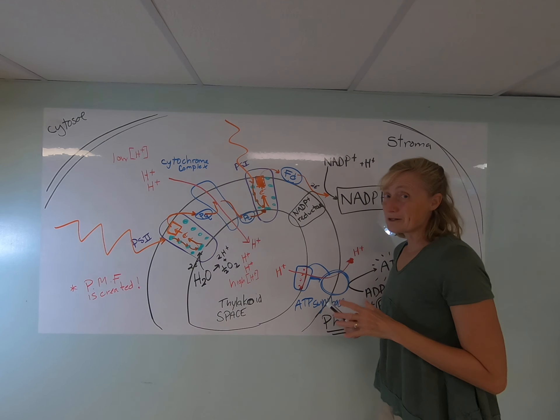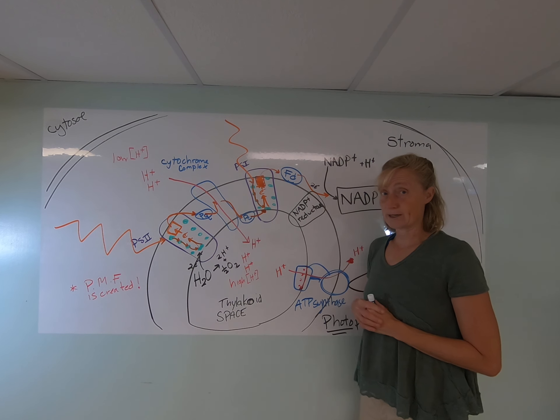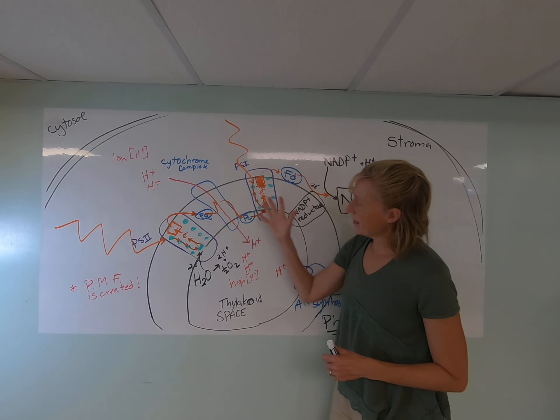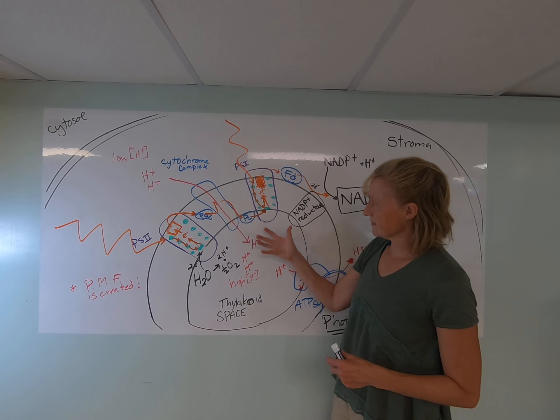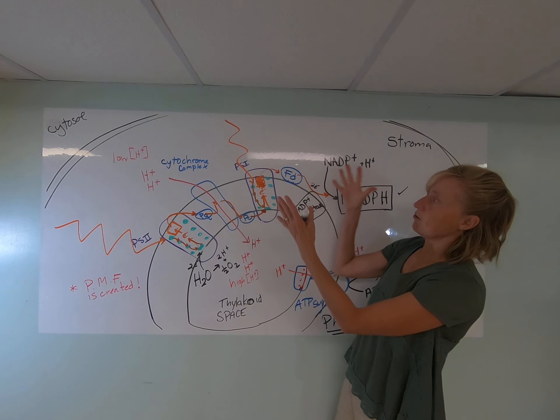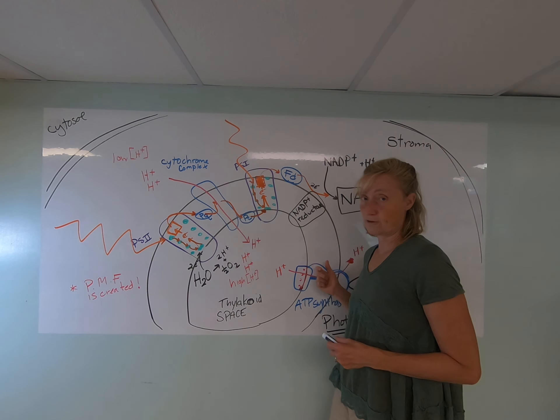We have a little more to add, because in addition to the linear light reactions, there are in fact something called cyclical light reactions, or cyclical flow of electrons. So while this is happening, remember there are lots and lots of these photosystems and these electron transport systems throughout a thylakoid membrane. And there are lots of thylakoids inside a single chloroplast. But in addition to linear flow, we can get something called cyclical electron flow.